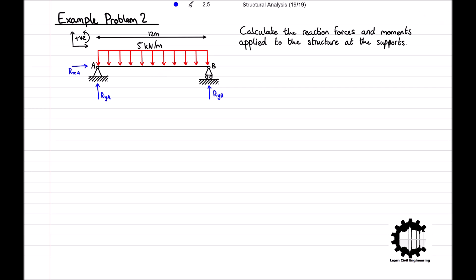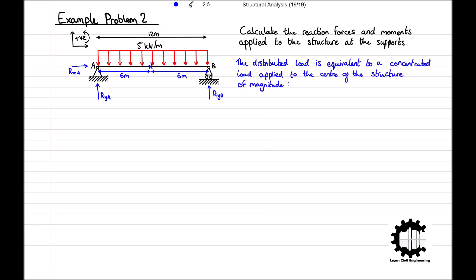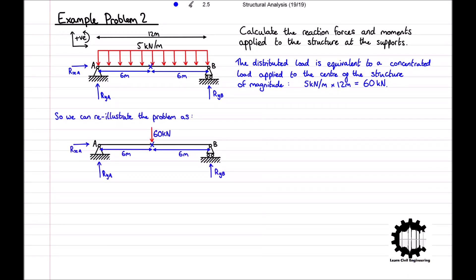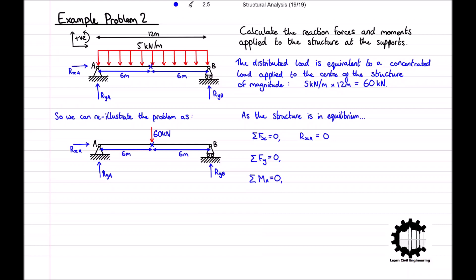For our two-dimensional structure, the centroid of the distributed load is at the centre, 6 meters from point A and 6 meters from point B. The distributed load is equivalent to a concentrated load of 5kN/m times 12m, which equals 60kN, applied at the centre. Considering equilibrium: the sum of all horizontal forces equals Rxa equals zero; the sum of all vertical forces equals RYA plus RYB minus 60 equals zero; and the sum of all moments at point A equals RYB times 12 minus 60 times 6, which equals zero.